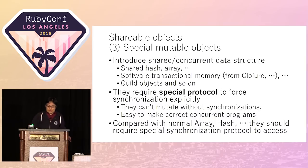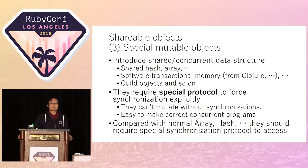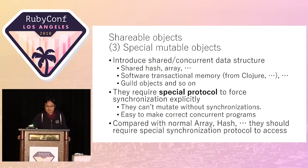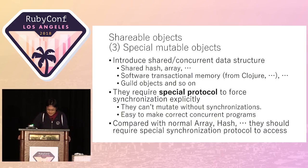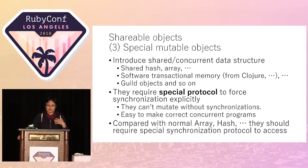For example, the Clojure language has shared mutable data structures using software transactional memory (STM). That is one strong option to implement. Compared with normal objects like arrays and hashes, a special mutable object introduces additional overhead because we need to introduce some protocol — such as transactions. But I think this overhead is not a problem, because only a few shareable objects are needed in ordinary concurrent programs.